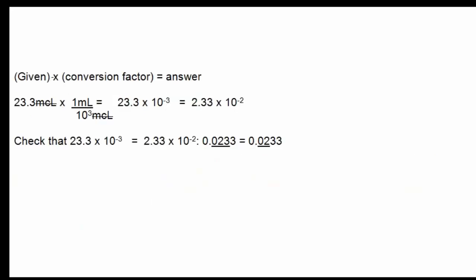We'll use dimensional analysis to solve this problem. The given is 23.3 microliters. The conversion factor is written as 1 milliliter per 1,000 microliters, so the unit of microliters cancels. We're left with 23.3 times 10⁻³ milliliters, which when converted to scientific notation is 2.33 times 10⁻² milliliters.